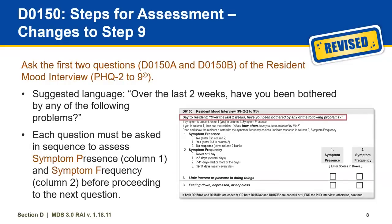For Step 4, Assessment 9, there was additional instruction added to reflect how the interview is broken up. Ask the first two questions, D0150A and D0150B of the resident mood interview PHQ 2-9. Additional instructions for this step were added to clarify the two columns: column 1 for symptom presence, and column 2 for symptom frequency.